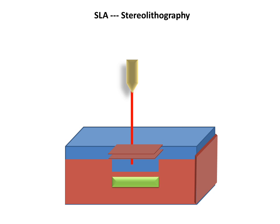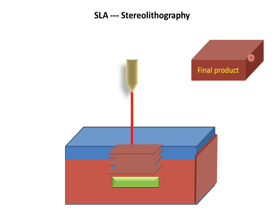This process will repeat again and again, and the layers are made. These layers are fused together to make a final product — made by the combination of polymer liquid and ultraviolet light. This is the SLA, stereolithography process. Thank you.